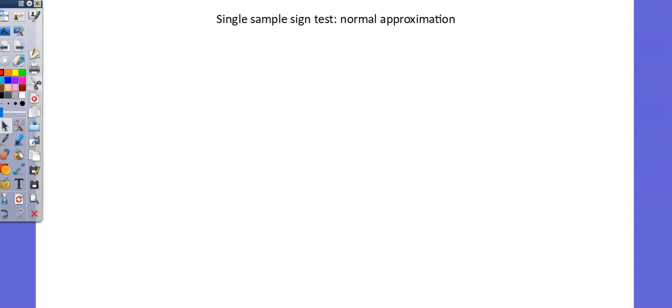Hi, I'm Teacher Thomas. Welcome to A-Level Maths. This is 9231, Further Probability and Statistics, Topic 4, Non-Parametric Tests. We're looking at the topic of Single Sample Sign Test, Normal Approximation.